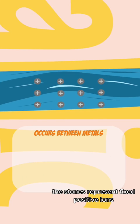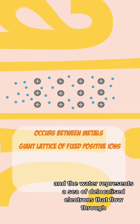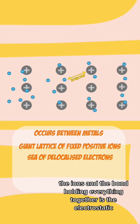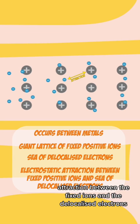The stones represent mixed positive ions and the water represents a sea of delocalized electrons that flow through the ions. And the bond holding everything together is the electrostatic attraction between the fixed ions and the delocalized electrons.